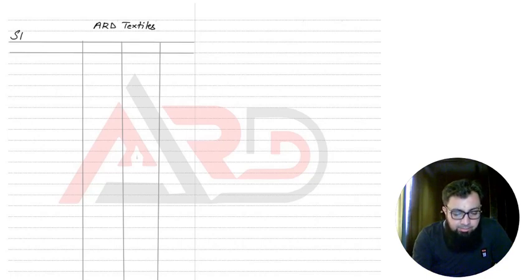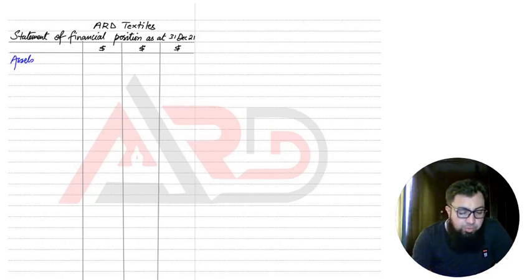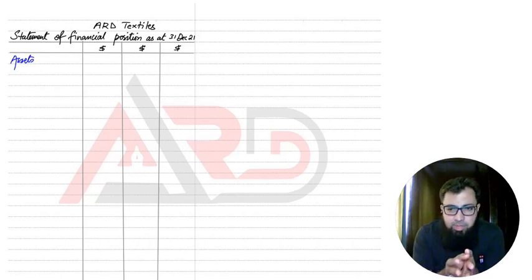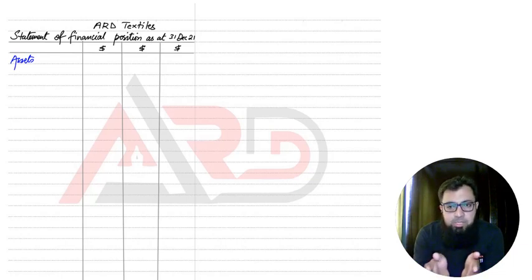I will be writing the heading which is normally given in the examination question. The statement of financial position is basically made in three columns. The three columns don't have anything to do with debit or credit. The SOFP is made on the premise of the accounting equation: assets is equal to capital plus liabilities. We will be using the plus equation here.